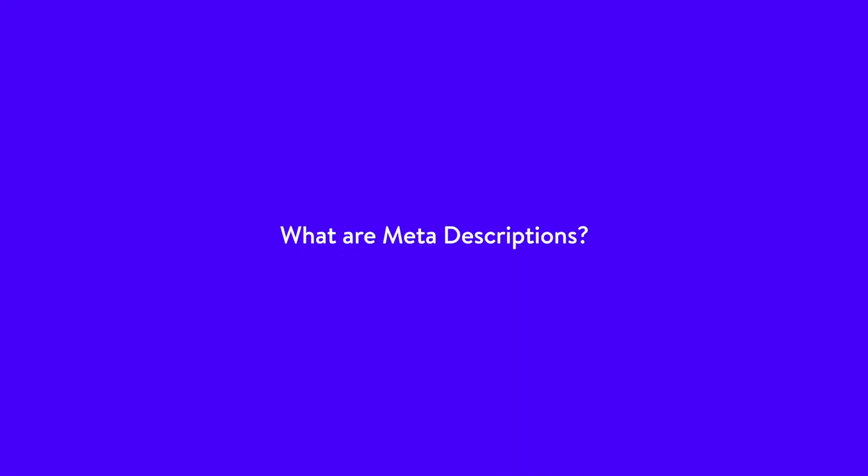First, let's talk about what meta descriptions are. Search engines like Google use a robot called a web crawler to index your site. The info this gives them allows them to display it properly in search results so you can be found when people search for relevant keywords. But since this program is just a program, it doesn't automatically know what your site is about. You have to tell it using different elements, such as site maps, schema markup, and meta tags, just to name a few.